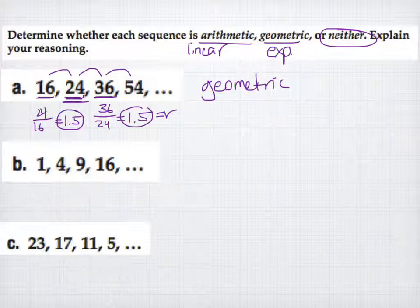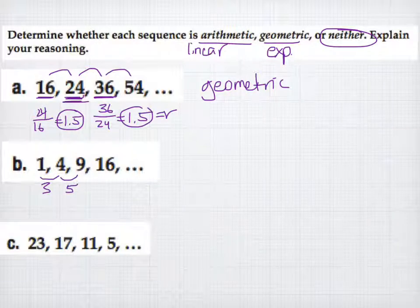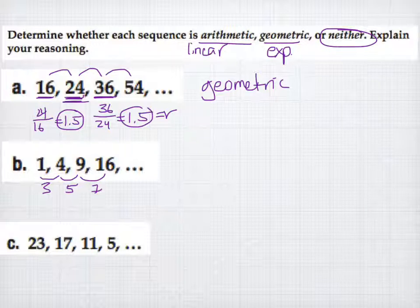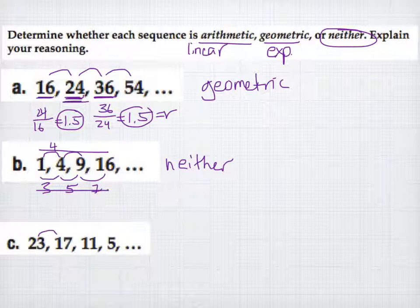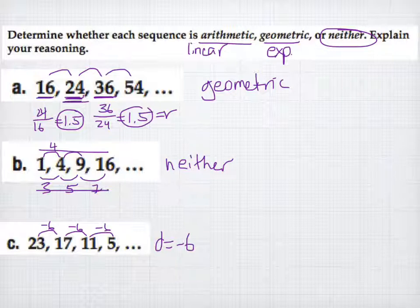For the sequence 1, 4, 9, 16 — from 1 to 4 you add 3, from 4 to 9 you add 5, from 9 to 16 you add 7, so it's not arithmetic. Checking multiplication: from 1 to 4 you multiply by 4, but from 4 to 9 you'd need to multiply by a fraction — so it's not geometric either. That means this sequence is neither. For 23, 17, 11, 5 — you're subtracting 6 each time, giving a common difference of negative 6, making it arithmetic.